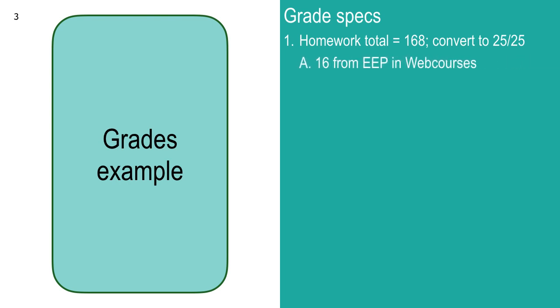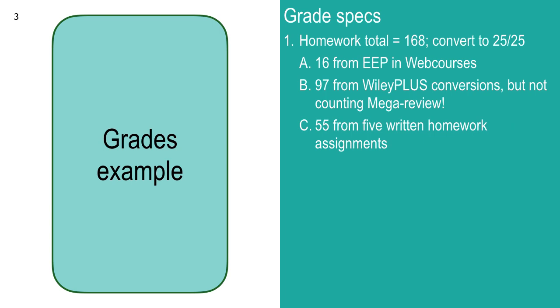The homework is three piles of points of various origin. First is the extra electric field practice, 16 out of the 168. Then we had 97 total regular homework, not counting the mega review. And 55 from the five written homeworks.